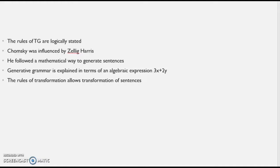Generative grammar is explained on the basis of the algebraic expression 3x + 2y. Just like 3x + 2y yields a number of results based on the values you substitute for x and y, similarly in generative grammar you have a basic formula and keep changing or adding words so that sentences are formulated in different ways.